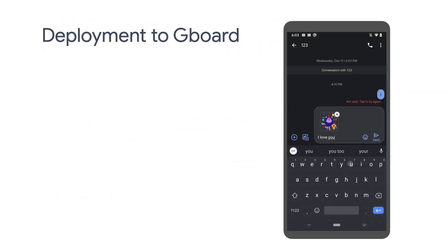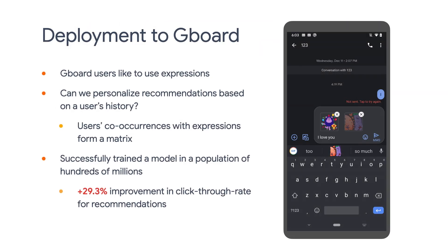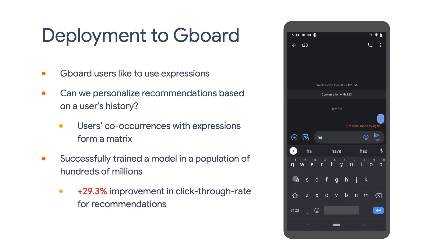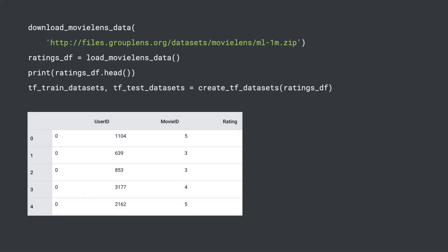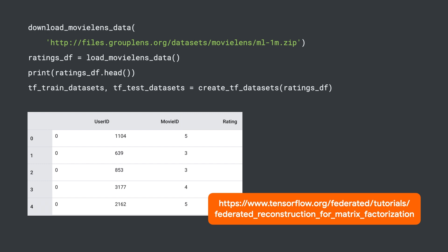The federated reconstruction approach has been successfully deployed into Gboard, a mobile keyboard app from Google. Gboard uses federated reconstruction to personalize recommendations based on a user's typing history and has seen a roughly 30% uplift in recommendation click-through rate, which is quite significant. We have also open-sourced the federated reconstruction code, which is built with TensorFlow Federated. You can use it to run the MovieLens recommendation simulation to see how it works.